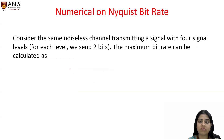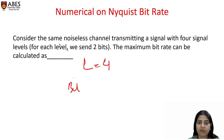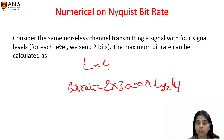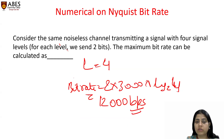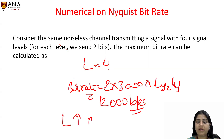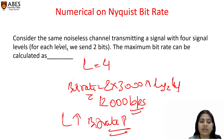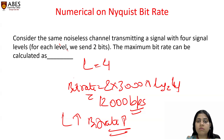Next, consider the same noiseless channel but now L = 4. Bit rate = 2 × 3000 × log₂(4) = 12,000 bps. In the previous example the answer was 6000, and here it is 12,000. So you can see that if we increase L, bit rate increases. Theoretically this is correct, but increasing the number of signal levels reduces the reliability of the system, so it is not practically used. Also, practically we cannot have a noiseless channel — the channel is always noisy.